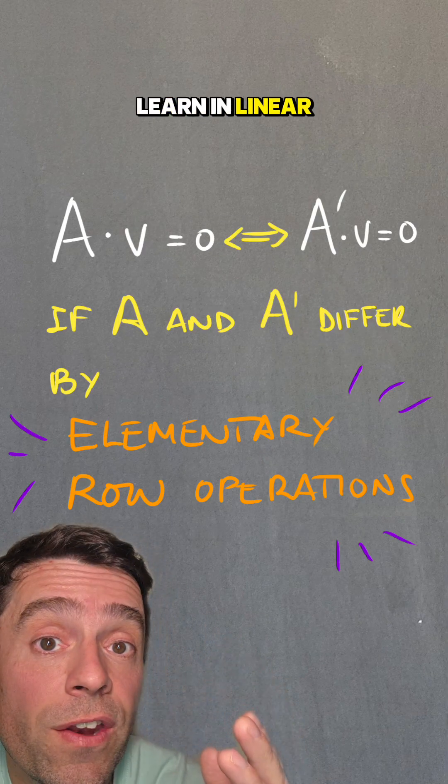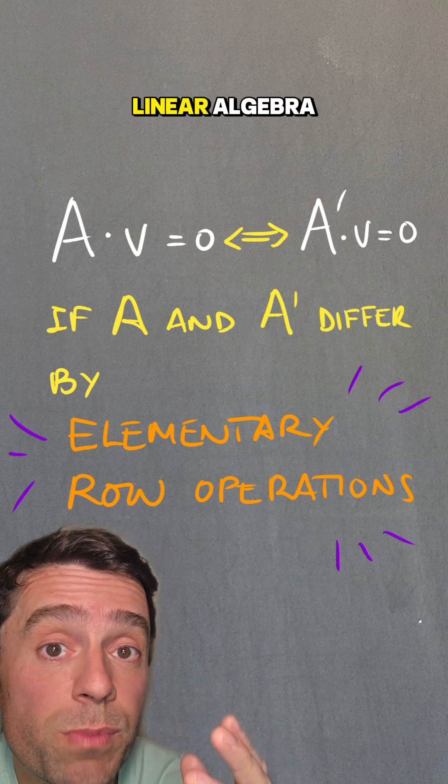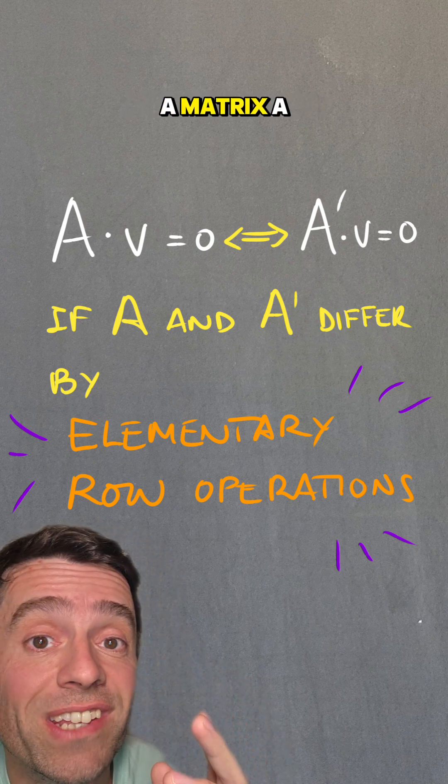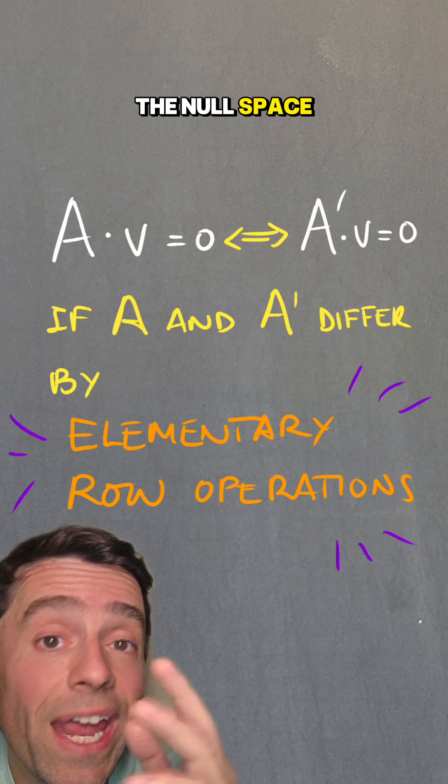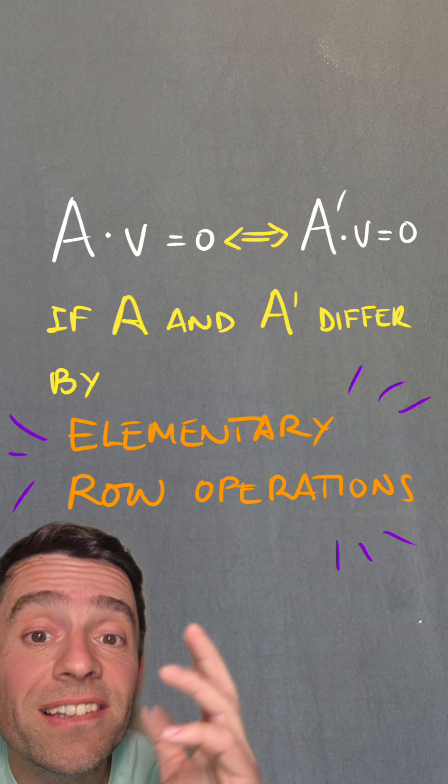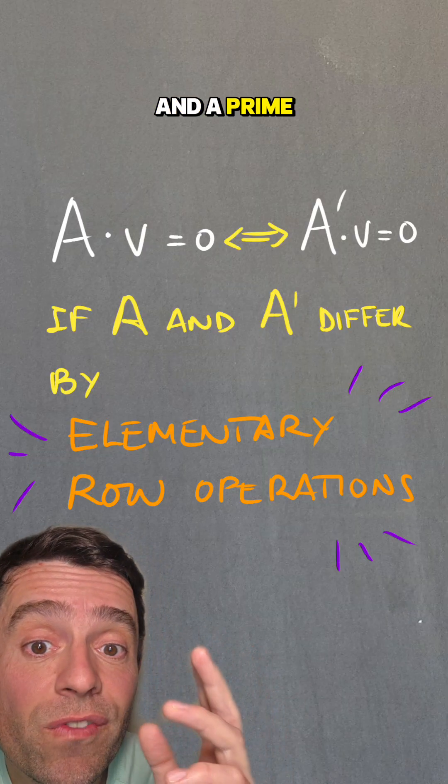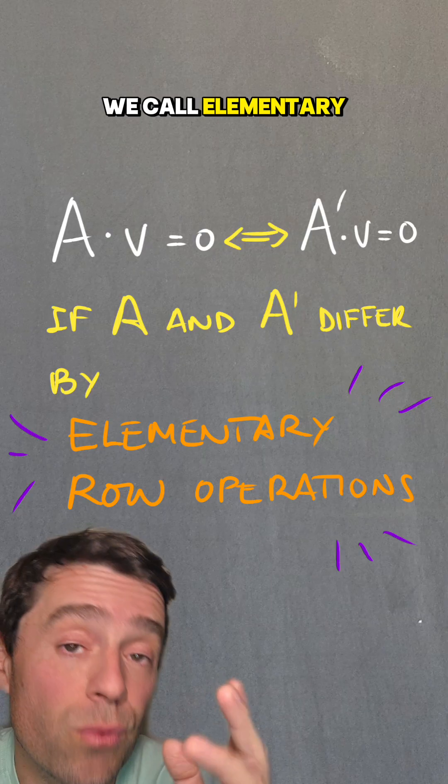Now, something that you learn in linear algebra or that you prove in linear algebra is that the null space of a matrix A is equivalent to the null space of any other matrix A' such that A and A' differ by what we call elementary row operations.